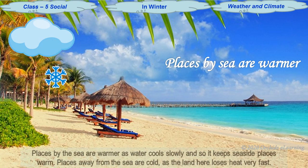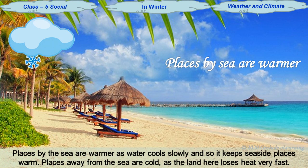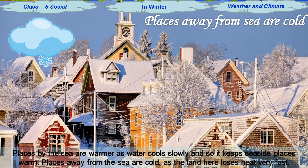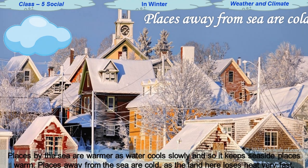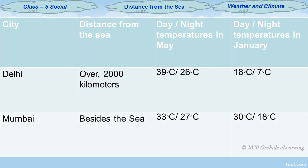In winter, places by the sea are warmer as the water cools slowly and so it keeps seaside places warm. Places away from the sea are cold as the land here loses heat very fast. Look at the table that shows summer and winter temperatures of Delhi and Mumbai. Delhi is inland and far away from the sea, while Mumbai is near the sea.